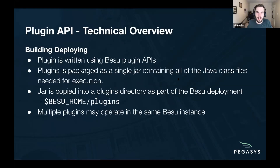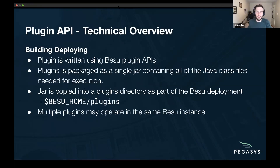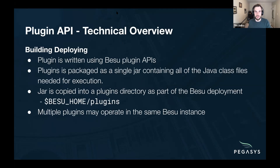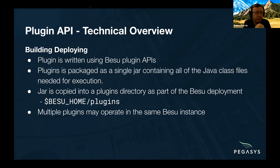Now Dano will walk us through the technical overview of the plugins API. So this will be the technical bit — we're going to go over some of the lower-level details of how you might build a plugin. The first question is how do you build and deploy a plugin? It's pretty simple — it's just a simple Java program that is in a jar. You expose a service from the jar via the Java plugin module system service APIs.